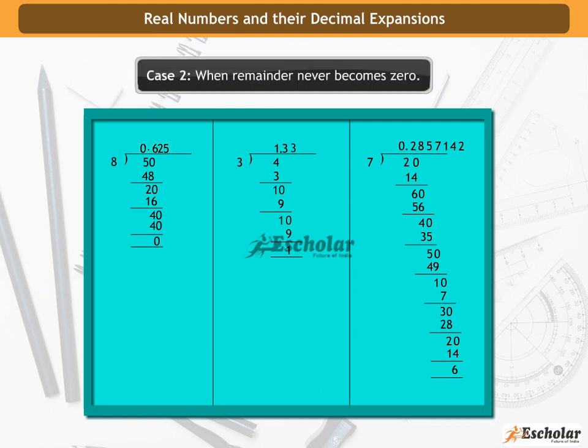Case 2: when remainder never becomes 0. In this case, the remainder never becomes 0 and the corresponding decimal expansion is non-terminating. In the decimal expansion of 4 by 3 and 2 by 7, we can see that the remainder never becomes 0. Thus, their corresponding decimal expansions are non-terminating.